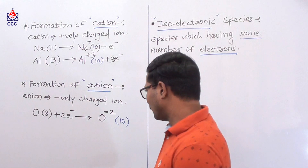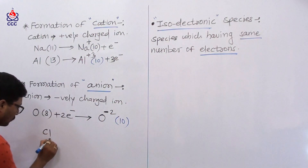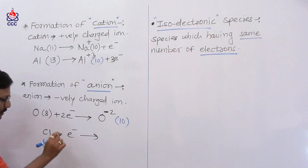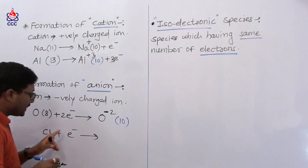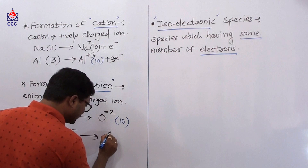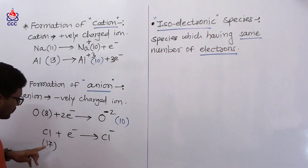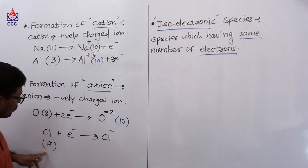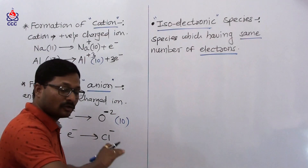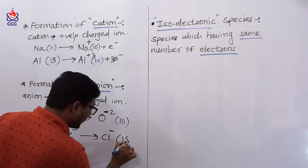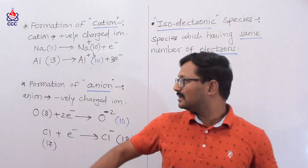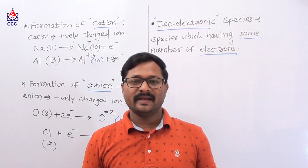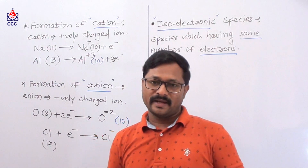One more example: chlorine. If chlorine gains 1 electron, then it forms the Cl- ion. Chlorine's atomic number is 17, so it originally has 17 electrons. When it gains 1 electron, Cl- ion has 18 electrons. So in this way there is a formation of anion — whenever any neutral atom gains 1 or more electrons, it forms an anion.